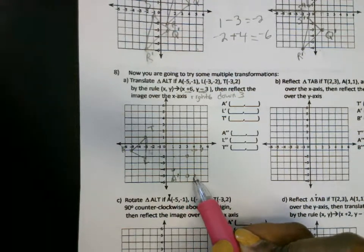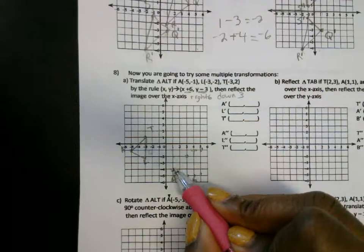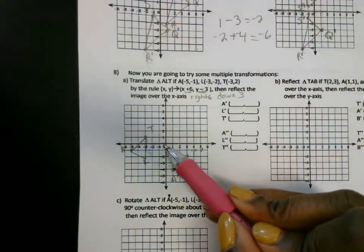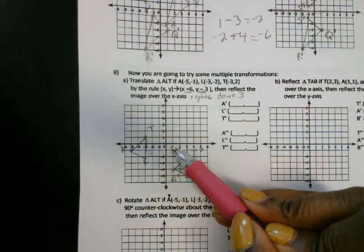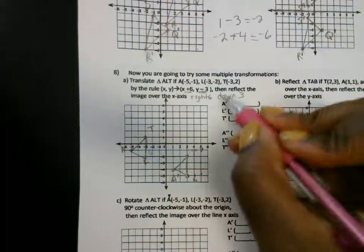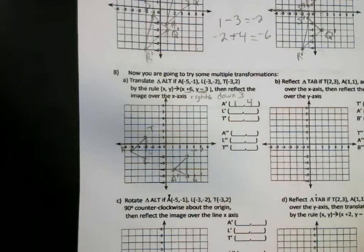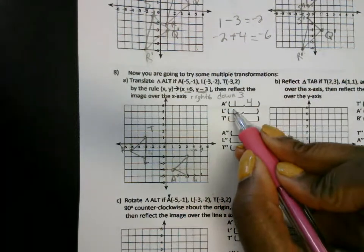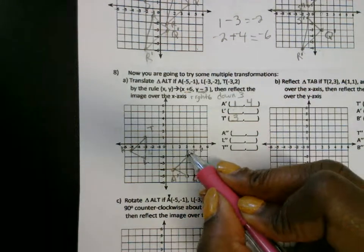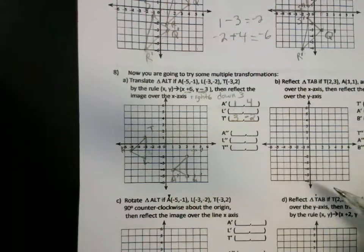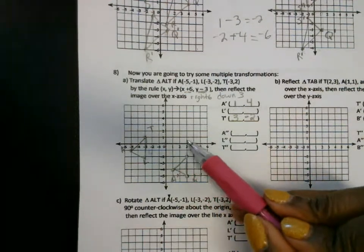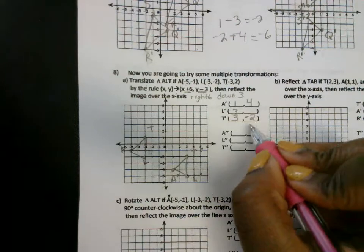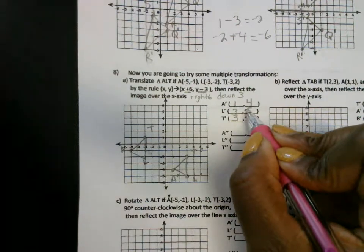This is L: down one, two, three, four, five, six. Down one, two, three, four. One comma four. And then T: one, two, three — positive three. And one, two — negative two. And L: one, two, three. Down one, two, three, four, five. And there you go.